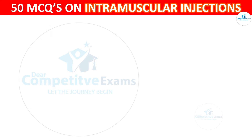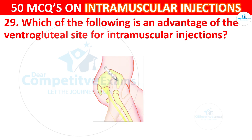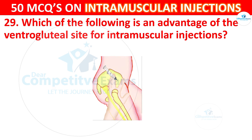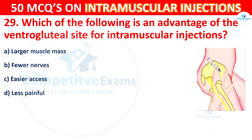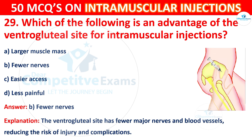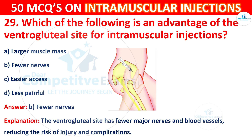Question 29: Which of the following is an advantage of the ventrogluteal site for intramuscular injections? Options are: larger muscle mass, fewer nerves, easier access, or less painful. The correct answer is B, fewer nerves. The ventrogluteal site has fewer major nerves and blood vessels, reducing the risk of injury and complications.